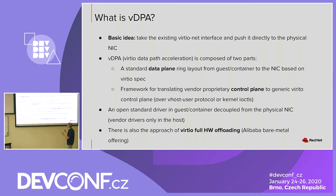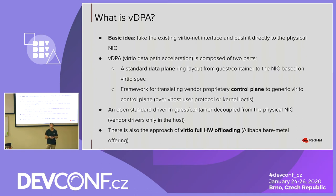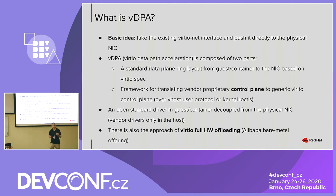What is VDPA? The basic concept takes something that's been around for 12 or more years — VirtIO networking and VirtIO virtualization — the ability to run VMs over a host. VirtIO-net is one of those interfaces for networking. We're basically taking VirtIO-net and instead of just running it from the VM or guest to the host, we're pulling it all the way down to the physical NIC. VDPA — VirtIO Data Path Acceleration — is composed of two parts: the data plane and the control plane.